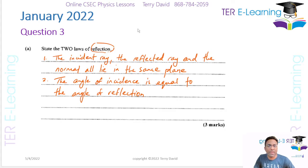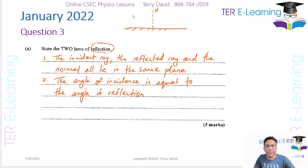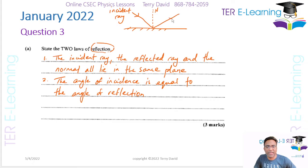Now when I say draw a simple diagram, you need to draw a mirror — this here represents my mirror. I'm going to draw a normal to the surface, and then draw a ray approaching the mirror. That ray approaching is called my incident ray, and because it's going to be reflected, this here is my reflected ray.